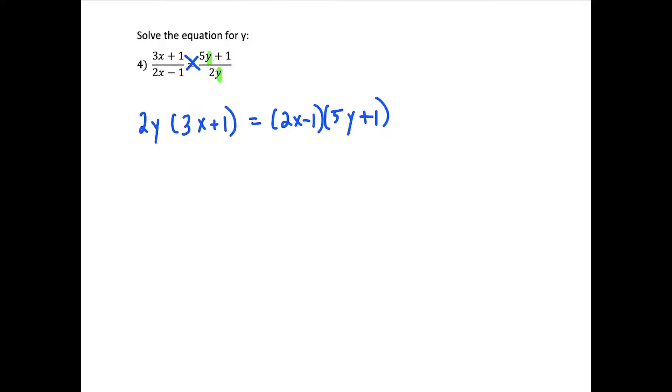So we're going to need to distribute first to create a better looking equation. So we have 2y times 3x is 6xy plus 2y when we multiply 2y times 1. And this is now equal to, we'll distribute the 2x. So 2x times 5y is 10xy. And then 2x times 1 is 2x. So then next we'll distribute the negative 1. So negative 1 times 5y is negative 5y. And then negative 1 times positive 1 is negative 1.